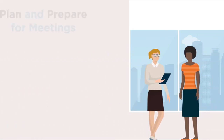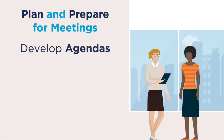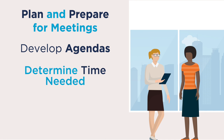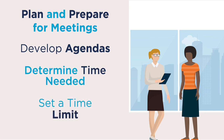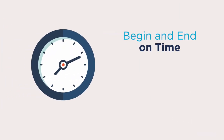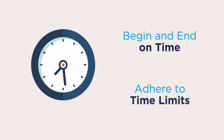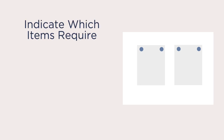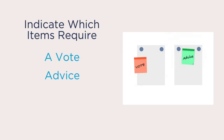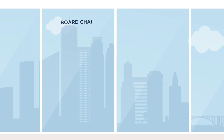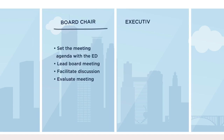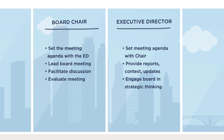In order to lead effective meetings, it's important to partner with the executive director to plan and prepare. Develop the agendas and plan for the flow of the meeting, determine the time needed to discuss each topic, and set time limits for each agenda item. Begin and end the meeting on time, indicate which items require a board vote, which require advice or guidance, and which are for information only. Decide what roles you'll take on and what the executive director will handle.